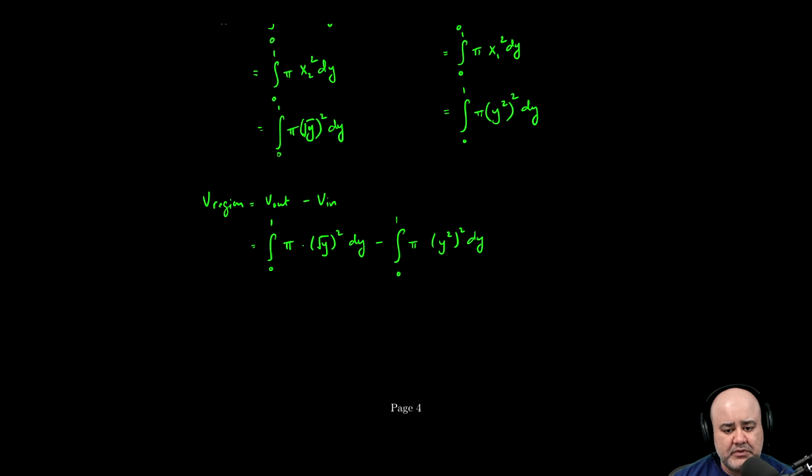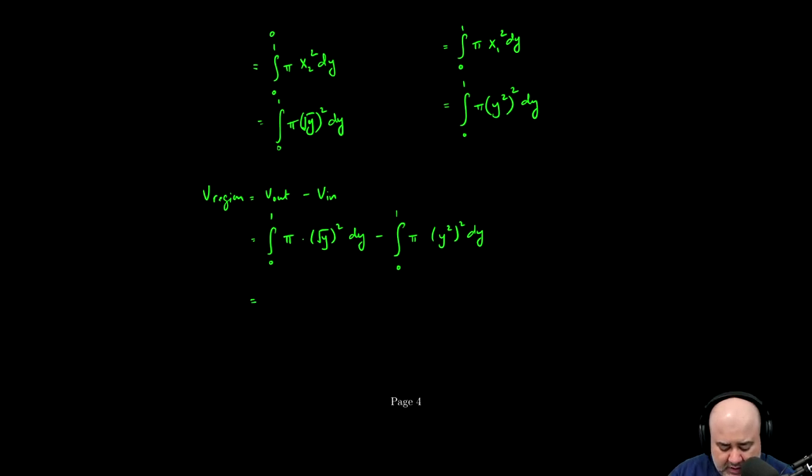We can combine these two integrals using properties of definite integrals. Because the limits of integration are the same, we can combine it into a single integral from zero to one of pi times the square root of y squared minus pi times y squared with respect to y.